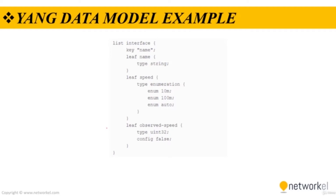The tree structure represents how to reach a specific element of the module, and the elements can be either configurable or not configurable. Every element has a defined type. For example, an interface can be configured to be on or off, however the operational interface state cannot be changed — for example, if the options are only up or down, it is either up or down and nothing else is possible.